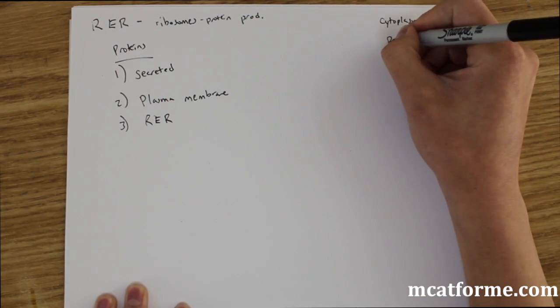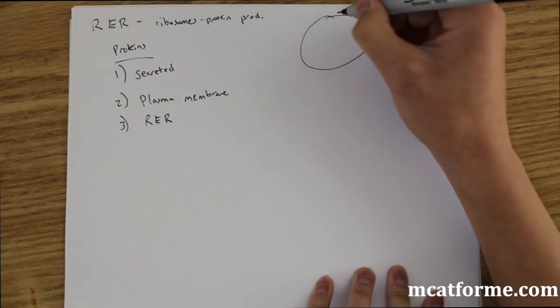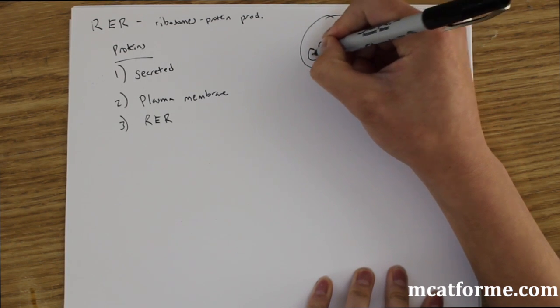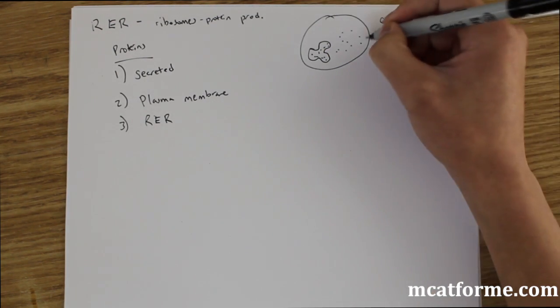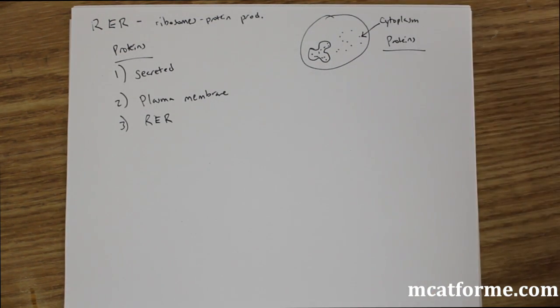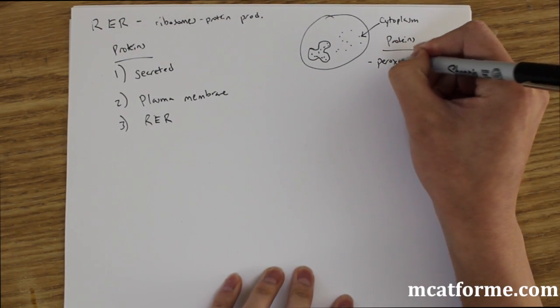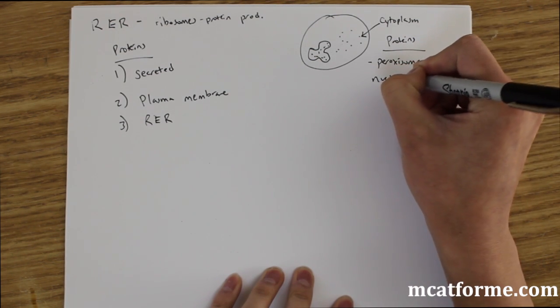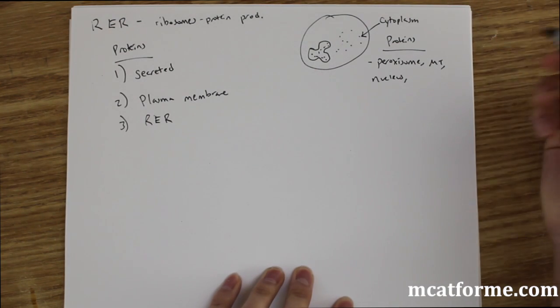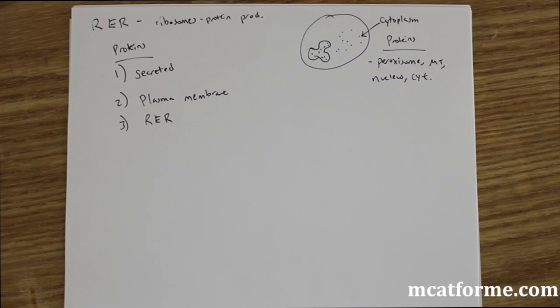Now if we look at the proteins that are made in the cytoplasm. If we imagine a cell like this, and we have our rough ER right there with all these little ribosomes on there, we can also have ribosomes all along the cytoplasm. The ribosomes free in the cytoplasm, what those can go onto is they can go to the peroxisome, they can go to produce mitochondria, the nucleus, or they can just make proteins for the cytoplasm. So fairly different functions for the proteins that are produced in these ribosomes.